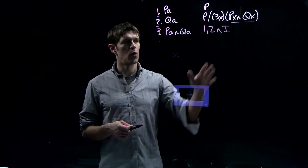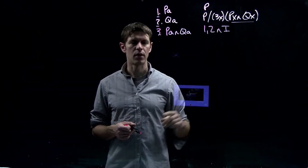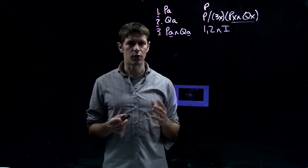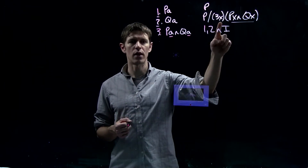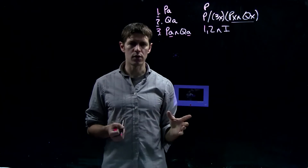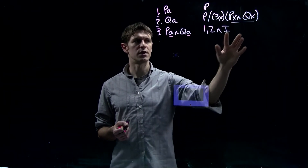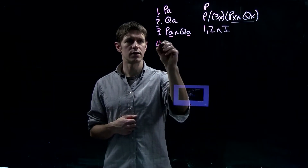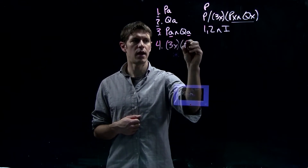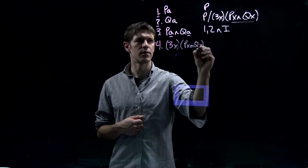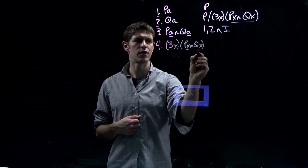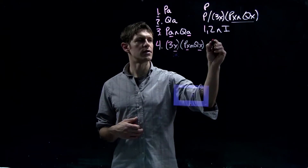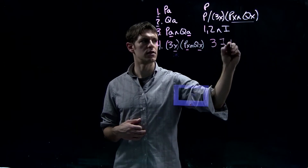Now that we have this conjunction, we can make use of existential introduction. Using existential introduction, we can replace at least one of the names in line three with an existentially quantified variable. If we replace more than one name, we need to make sure the replacement is uniform — that is, we replace the same name with the same variable. So we write EX(PX ∧ QX), replacing the names A with variable X, quantified by the existential quantifier. This is from line three by existential introduction.